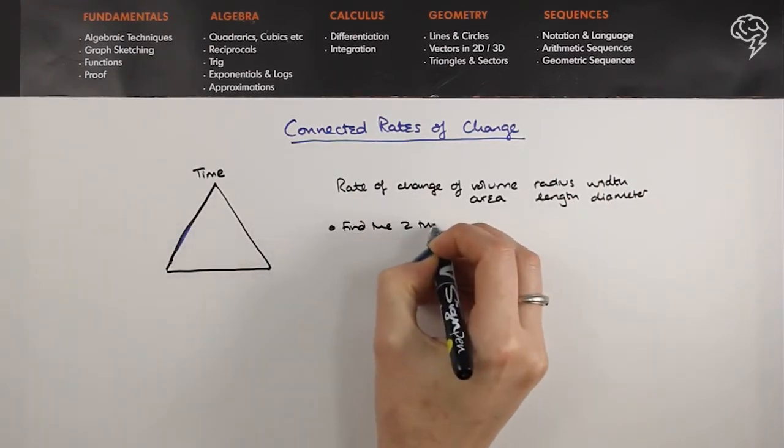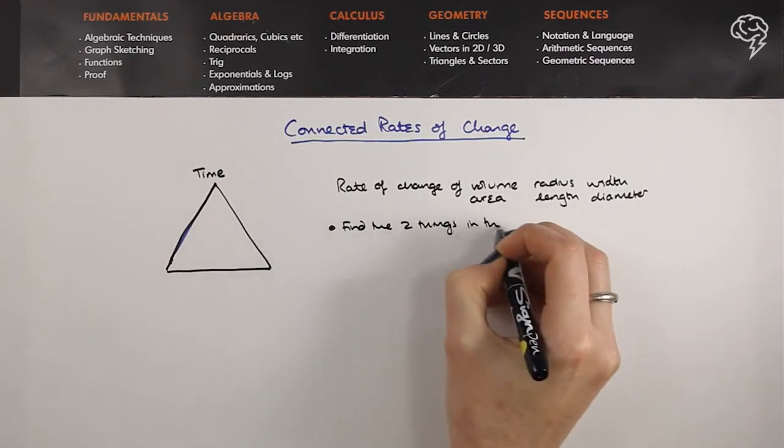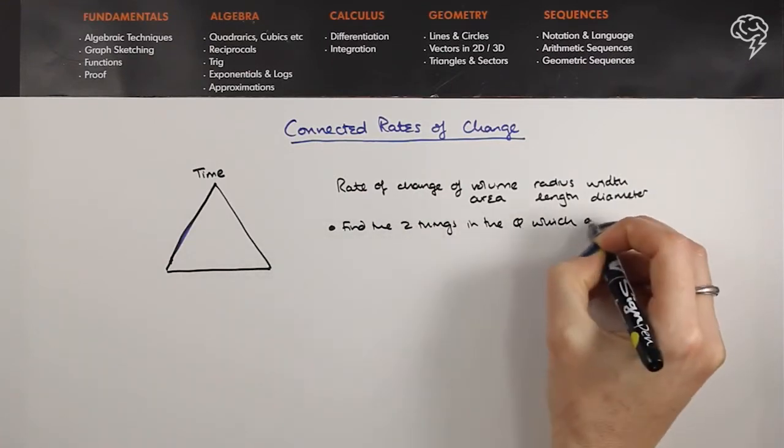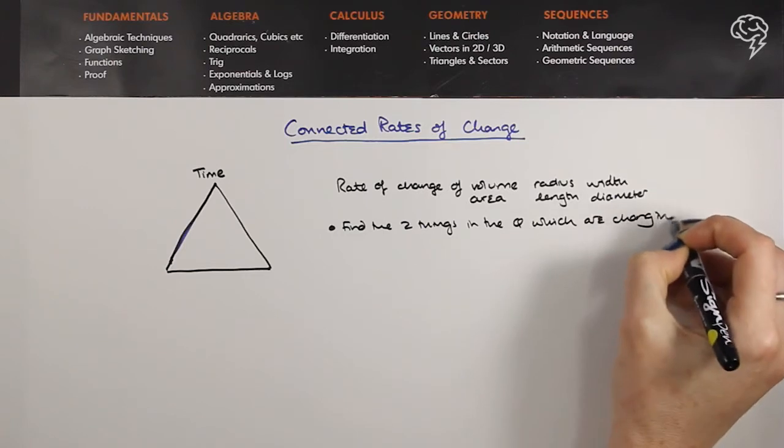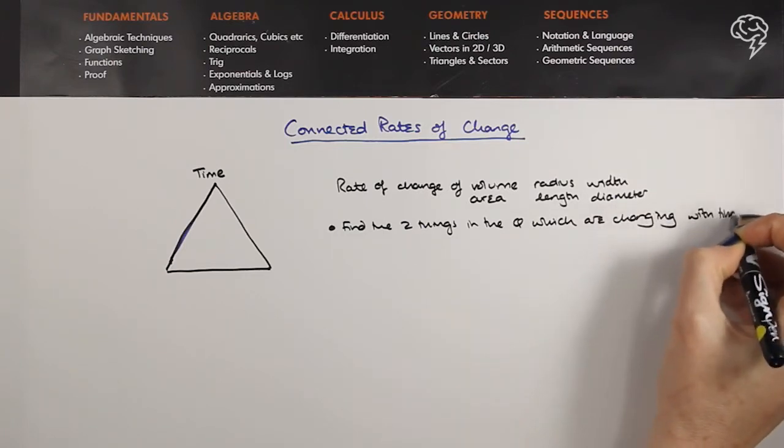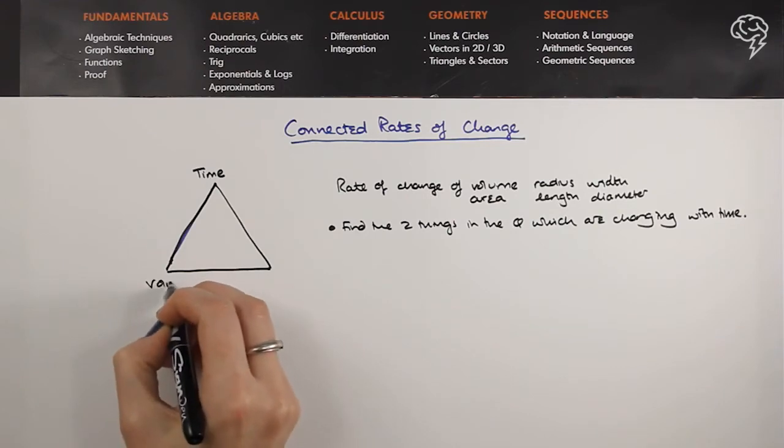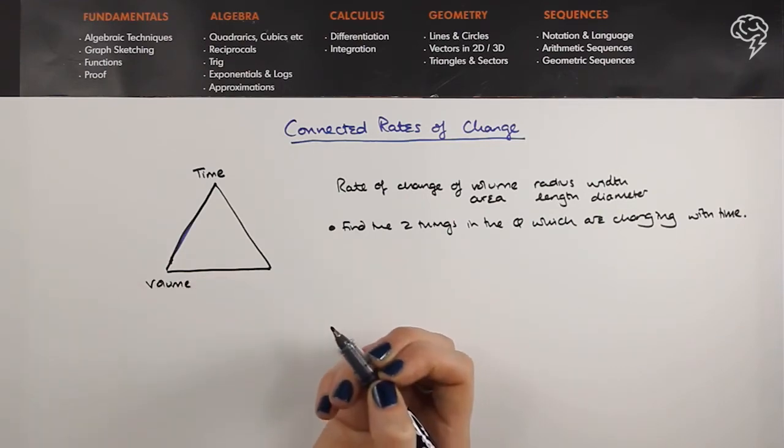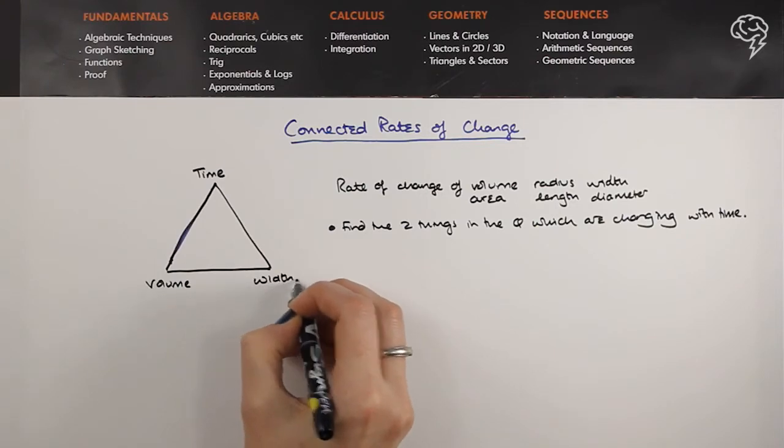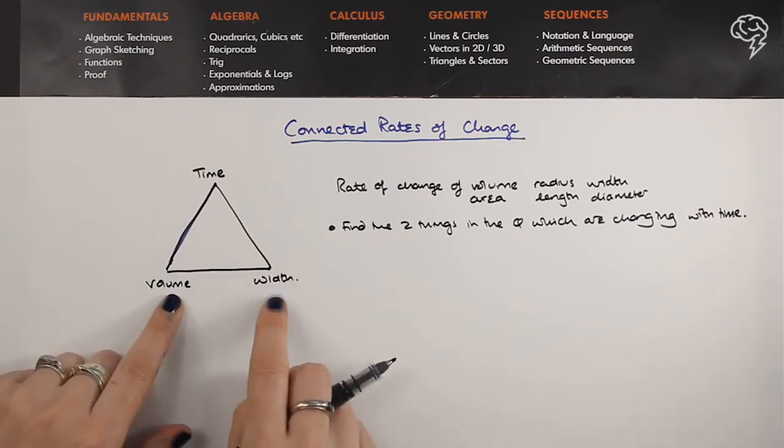So find those two things in the question that are changing with time. They are going to go here and here. So I'll just make one up - that it's volume and let's do cube, so width and volume.